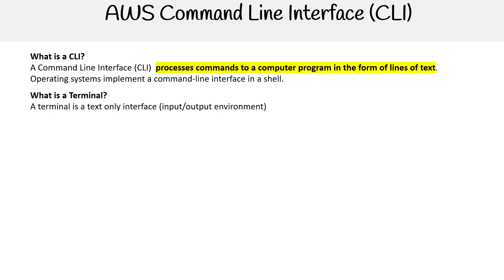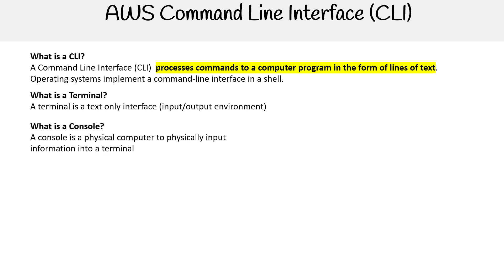A terminal is the text-only interface — it's basically the environment where we're going to be inputting and getting output. Then you have a console. A console is a physical computer used to physically input information into a terminal. You might be remembering that there's a thing called the AWS Management Console, and the reason why that's confusing is that console is sometimes used to describe web browsers that have web applications that interact with programs. But the real definition is a console is a physical computer to physically input information into a terminal.